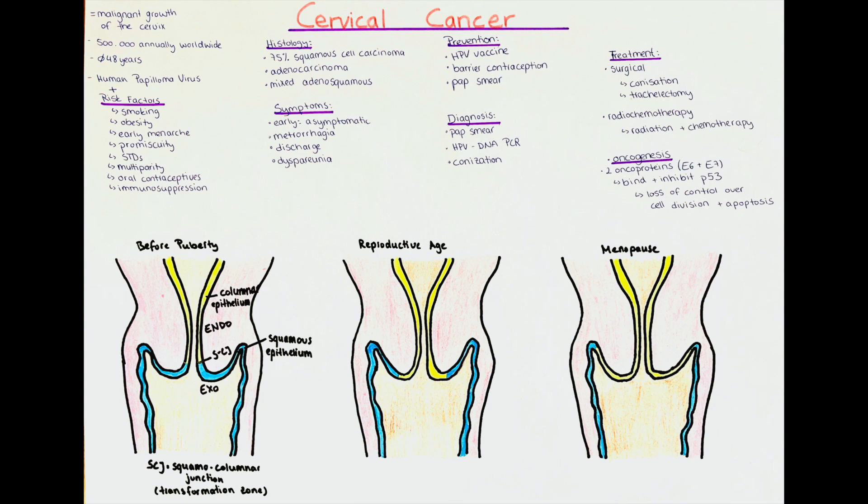Metastasis occur, generally speaking, first via the lymphatic system to the parametrium of the uterus as well as the pelvic lymph nodes. Relatively late, metastasis also occur via hematogenous spread. The most often affected organs are usually the liver, lungs, and bones.